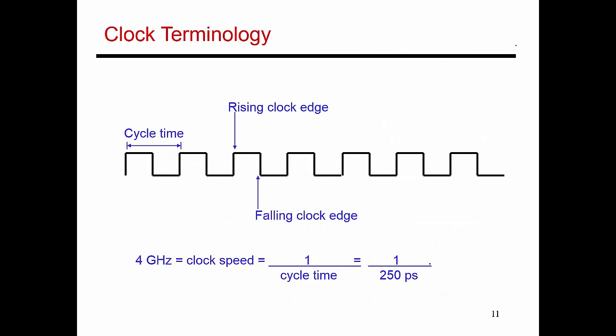So we've already seen this before, where the cycle time for a clock is defined as the gap between, say, two rising edges. And the inverse of the cycle time gives me my clock speed.